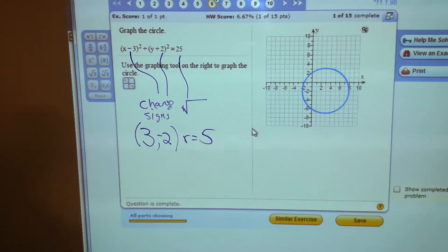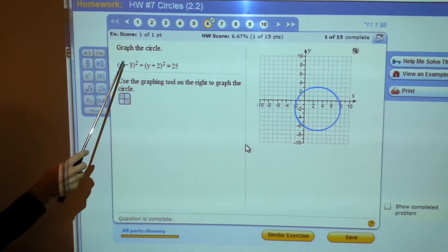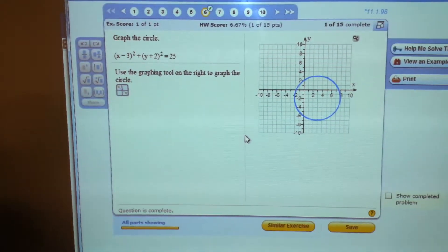Let's do one more of these. Remember to find the center and radius. Change the sign, change the sign, square root.